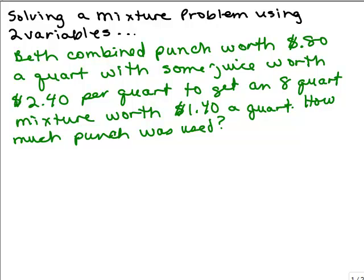All right, we're going to solve a value mixture problem using two variables. By value mixture, we're talking about costs. So here's an example.